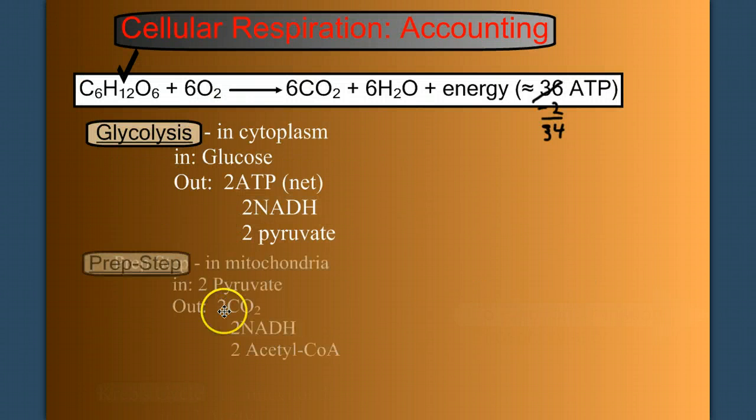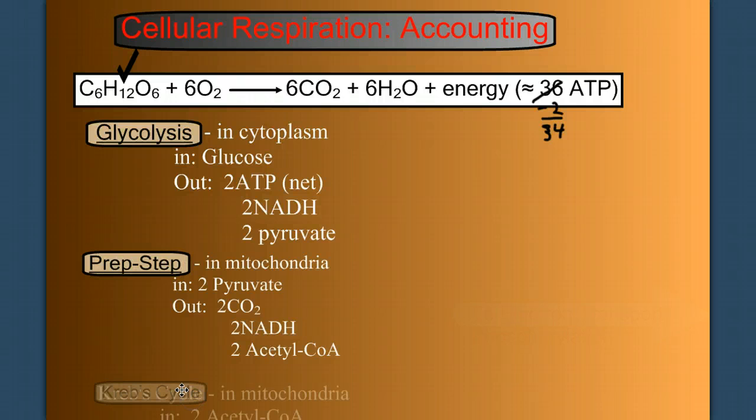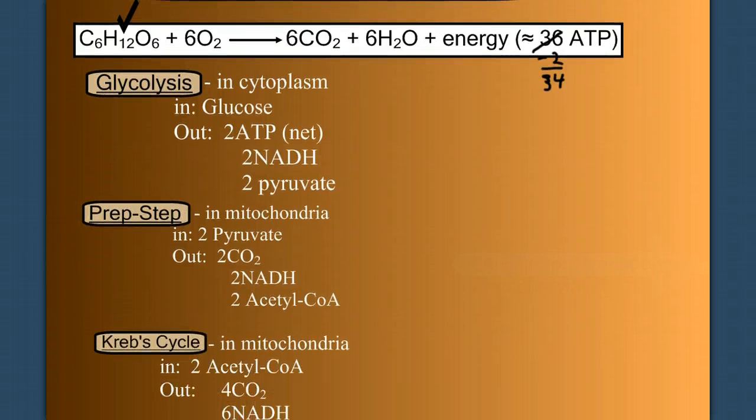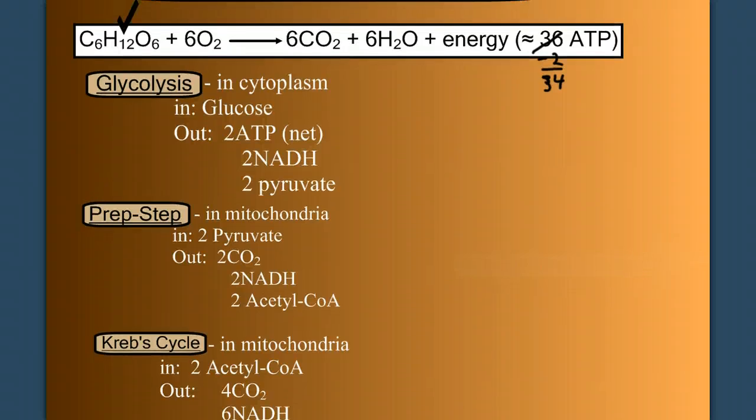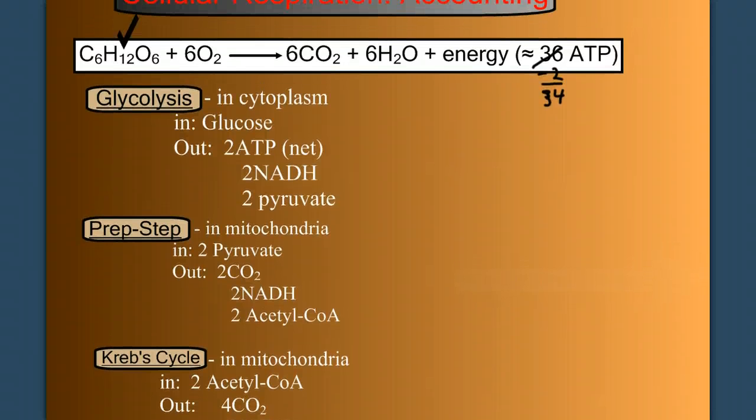And for our accounting, here we add the prep step and the Krebs cycle to this page, and let's see where we're at now. Now, have we used oxygen yet? No. Have we made six carbon dioxides? Yes. We made two in the prep step and four in the Krebs cycle. Have we made any water? No. How about energy?